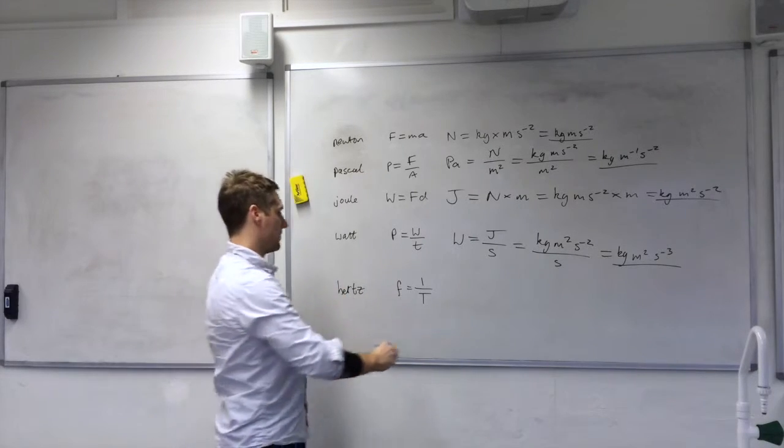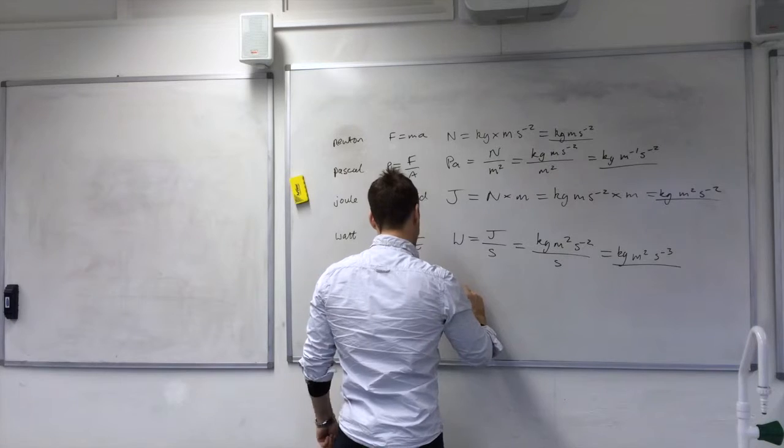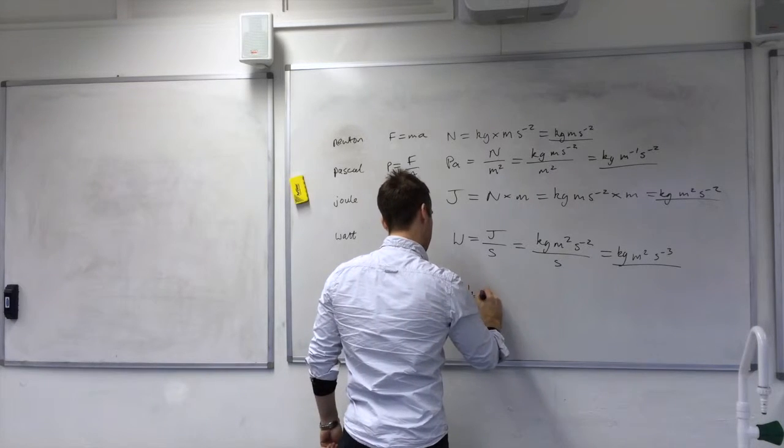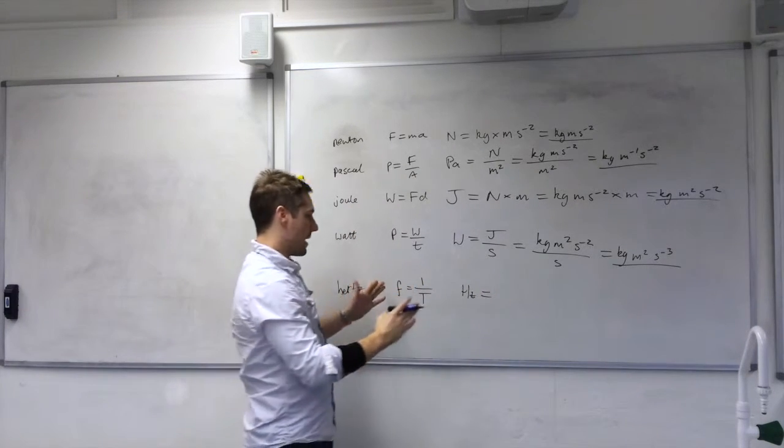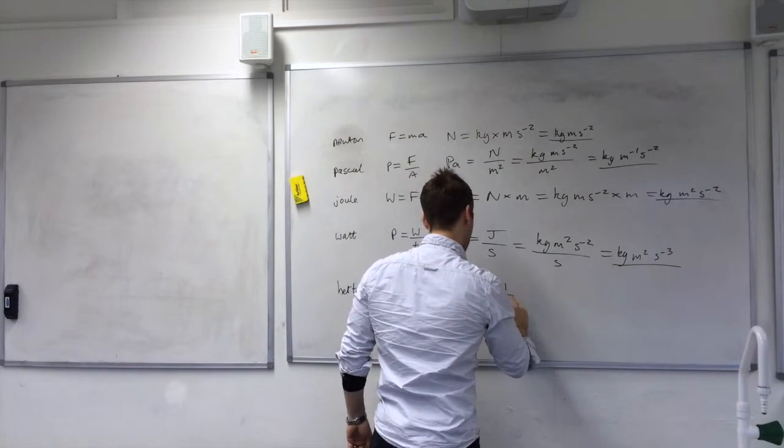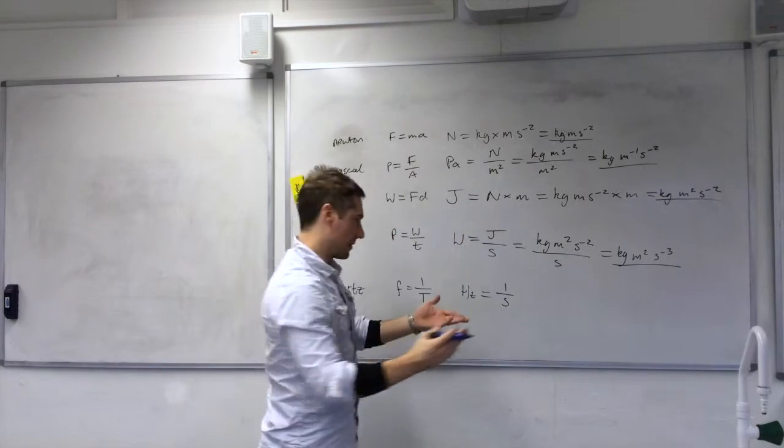Last one, hertz. So f is measured in hertz. One is a constant that doesn't have any units. So it's one over seconds. So that's just seconds to minus one.